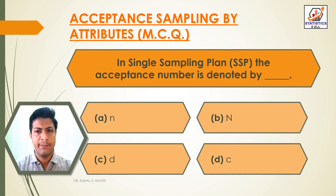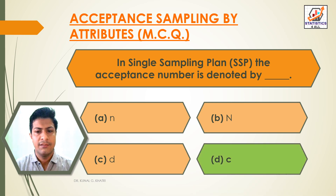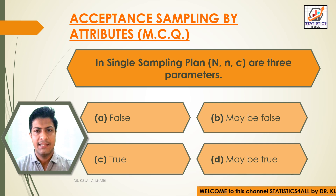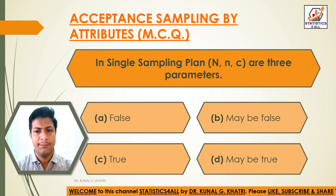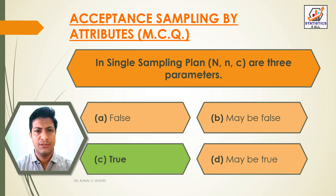Question 13: In a single sampling plan, the acceptance number is denoted by C. N (capital), n (small), and C are three parameters of the single sampling plan. Option A: False. Option B: May be false. Option C: True. Option D: May be true. The answer is Option C — True. Capital N, small n, and small C are three parameters.